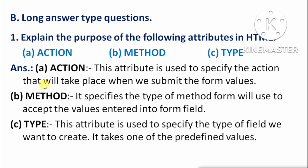Next is 'type': This attribute is used to specify the type of field we want to create — yeh attribute specify karta hai ki hum kis tarah ka field create karna chahte hain. It takes one of the predefined values — aur yeh predefined values mein se ek value ko accept karta hai.